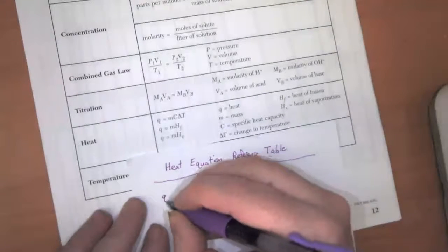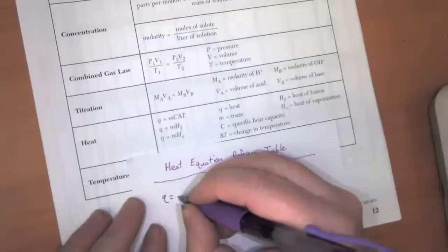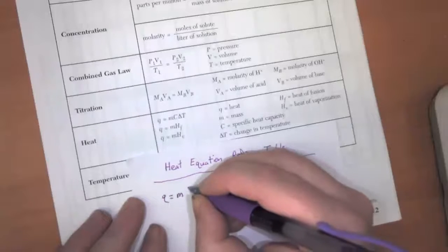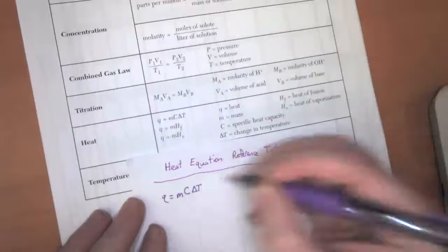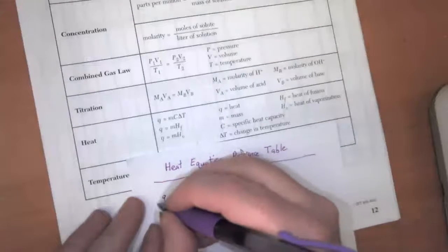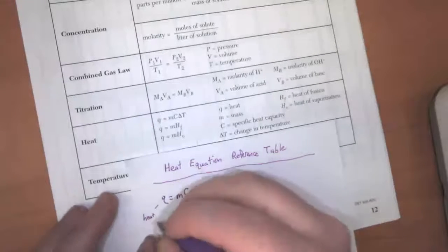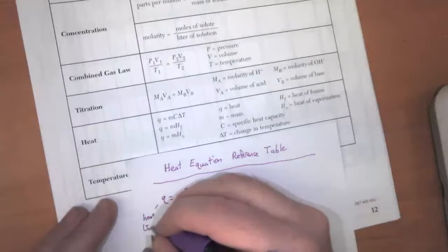All right, so we have Q is equal to M times capital C times delta T. All right, so Q, this is heat. We measure heat in joules.